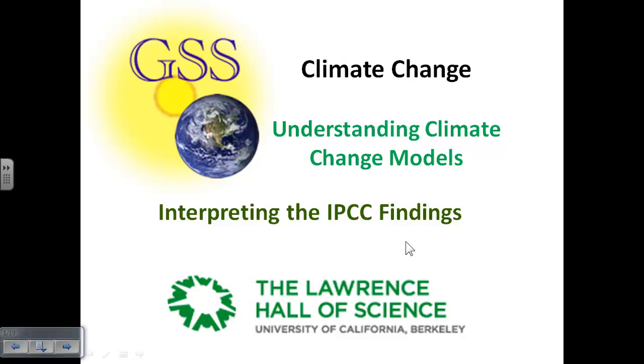Hello and welcome to Global System Science, Global Climate Change Unit. In Chapter 7, we discuss how computer models are used to help make predictions about what will happen to the climate in the future.